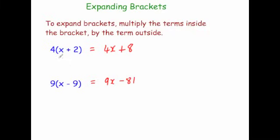Another way to do it is if it's just a positive outside the bracket, so just like a 4 or a 9, you can just do 4 times x is 4x, 4 times 2 is 8, and then just put a plus sign in the middle if it's a plus sign there. Likewise 9 times x is 9x and 9 times 9 is 81, then just put the minus. That works if you've just got a positive outside, like a 4 or a 9. You only need to be careful whenever it's a minus number outside the bracket.